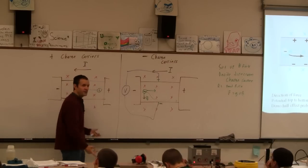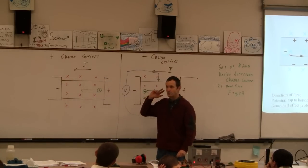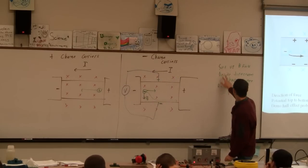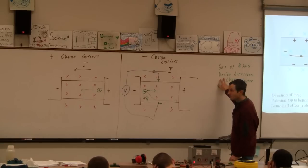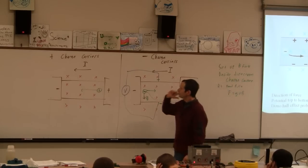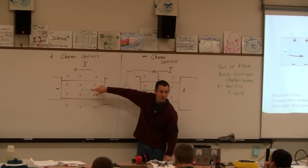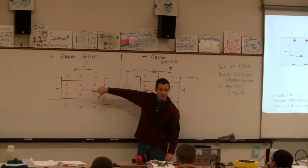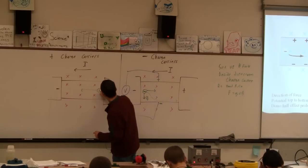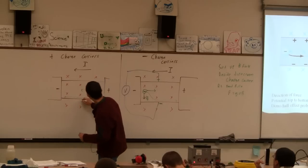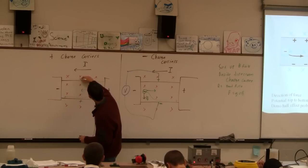Now let's figure out the direction of the force on this positive charge. We've set up the magnetic field and decided the direction the charge carrier goes — now we do the right-hand rule. Magnetic field into the page, positive charge moving to the left — the magnetic force is downward. That means the bottom of this thing is going to drift down toward the bottom, so the bottom of this will be positive.